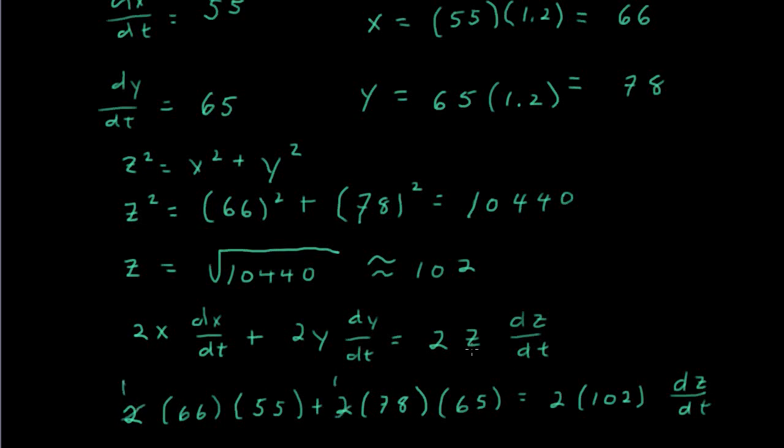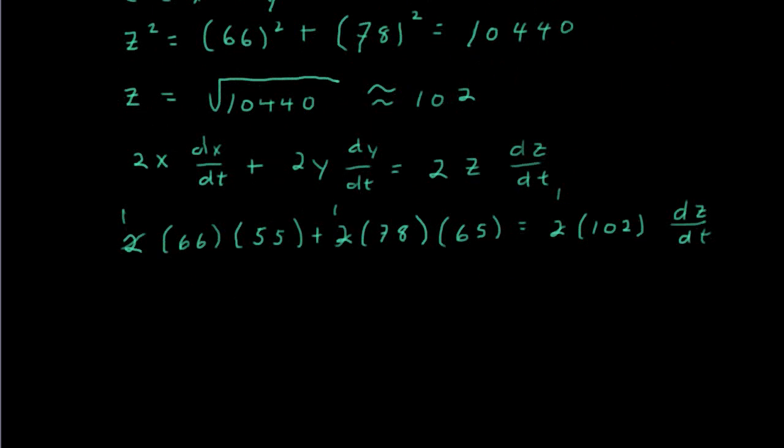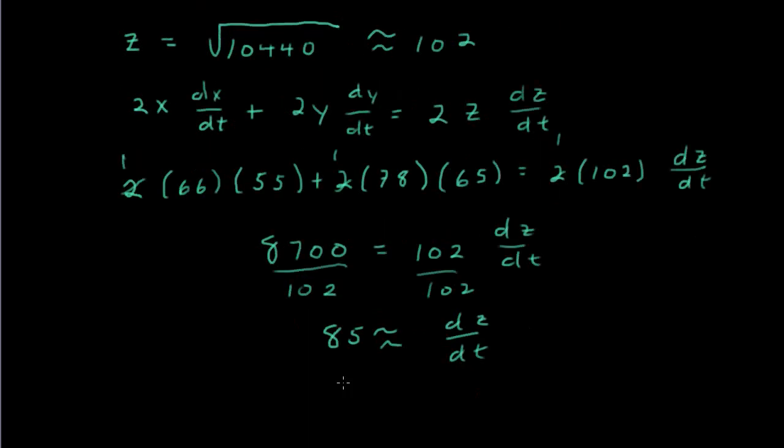You notice that we have 2s on both sides of the equation in each term on the left side and on the right side, so we can cancel those out just to make the arithmetic a little bit simpler. And once again, using our calculator, we come up with adding, first multiplying and then adding those two products together, we get 8,700 equals 102 dz/dt, dividing both sides by 102. And we get approximately 85 for the value of dz/dt, and that is how fast the distance between the cars is increasing, and that is in miles per hour. So 85 miles per hour is our solution. And there you have it.